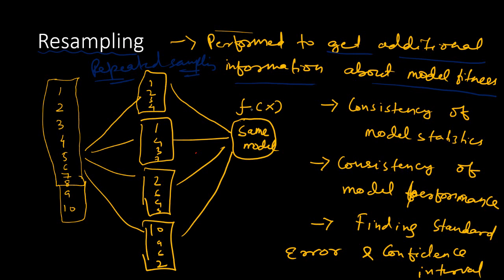How is it performed and what additional information do you get by performing repeated sampling? Let's consider this example: we have 10 observations. The population has 10 observations, and then the model has been built on this dataset, and then you need to perform resampling on that.